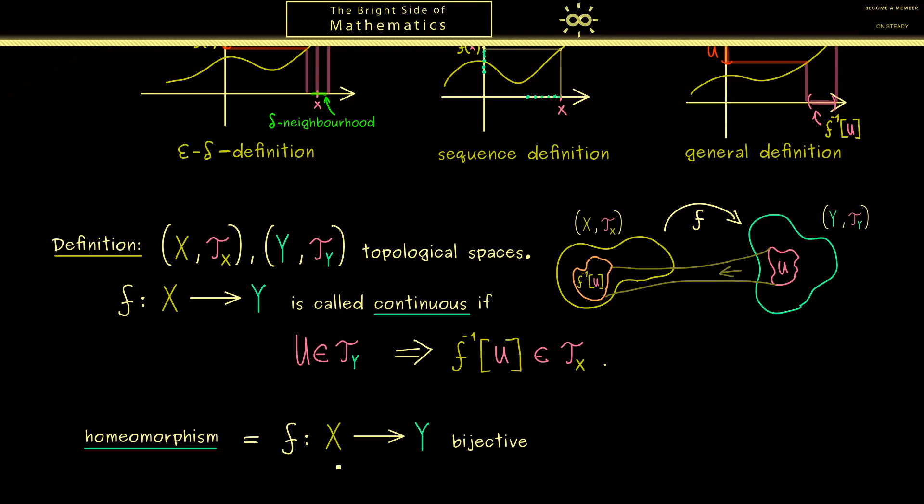More concretely this means first the map f should be a bijective map, and second also a continuous map by this definition. And most importantly we also have the third property that the inverse is also a continuous map. Of course don't forget f inverse goes from Y into X.